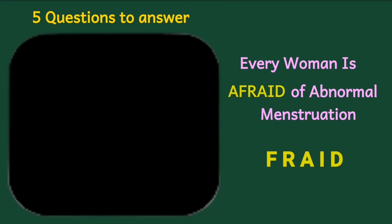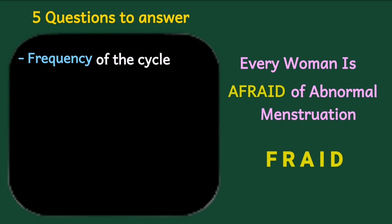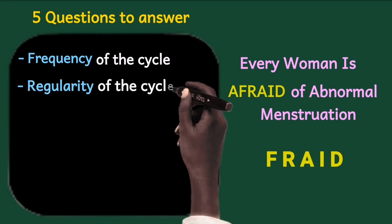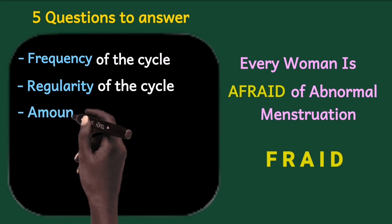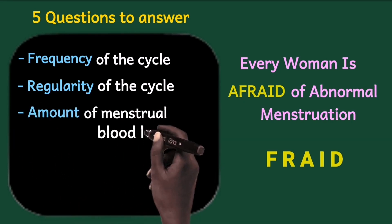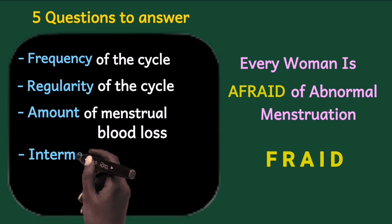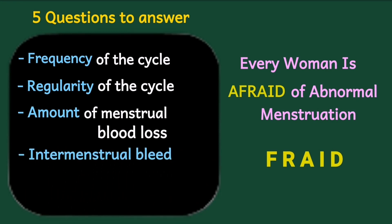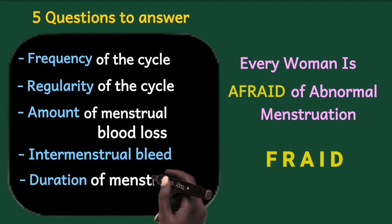F stands for the frequency of the menstrual cycle. R stands for the regularity of the menstrual cycle. A stands for the amount of menstrual blood loss per menstrual cycle. I stands for intermenstrual bleeding — we want to know whether she has intermenstrual bleeding or not. And D for the duration of the menstruation.